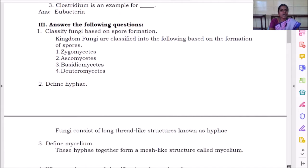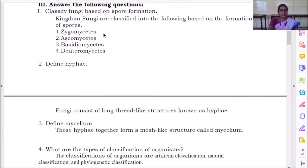Classify fungi based on spore formation. So what are the classifications we have studied in fungi? It is zygomycetes, ascomycetes, basidiomycetes, and deuteromycetes. How to pronounce it?